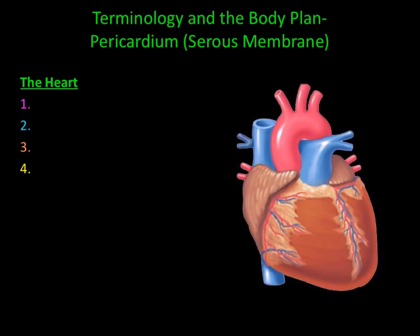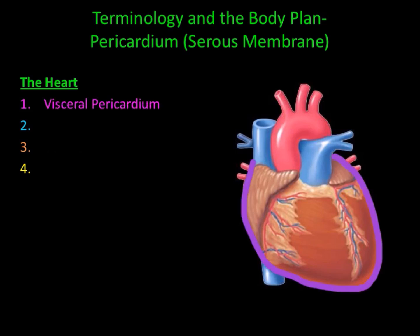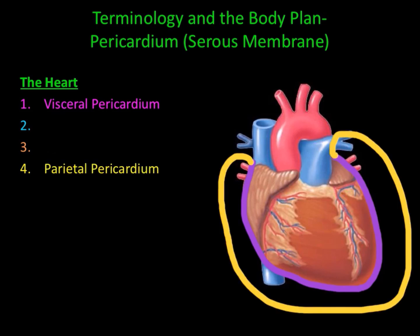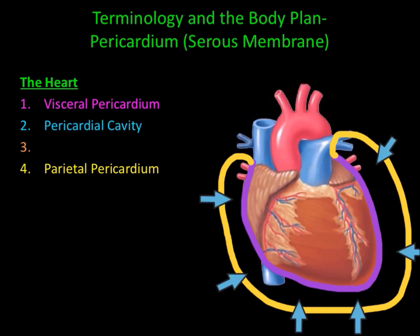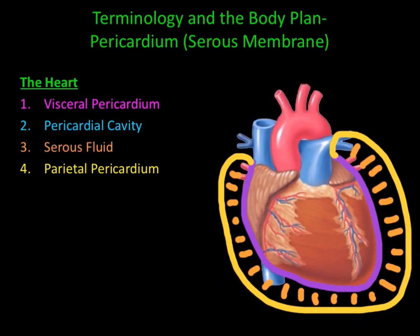The serous membrane surrounding the heart is called the pericardium. It has four parts: the visceral pericardium, which touches the heart itself; the parietal pericardium, which is the outermost membrane; the pericardial cavity in between them; and serous fluid or pericardial fluid within the pericardial cavity.